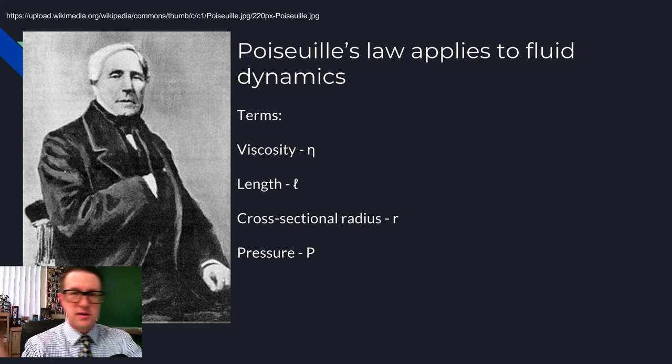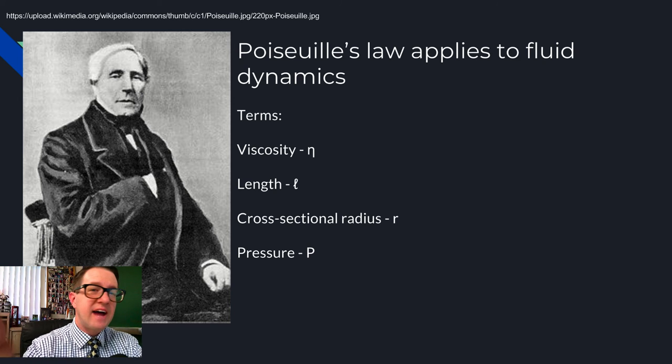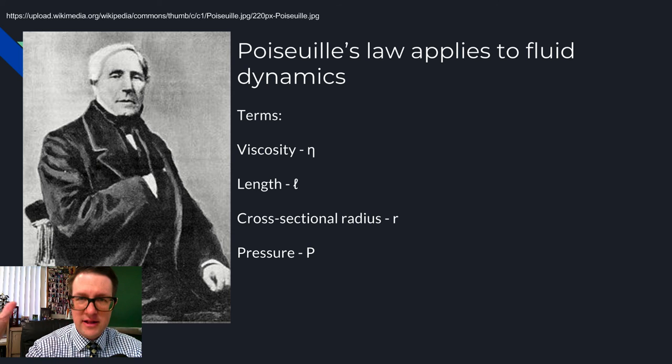Length would be how long are you letting it dump through. Makes sense. Cross-sectional radius, you all know circles. Middle to the outside, that's a radius. Pressure would be how hard are you pushing.